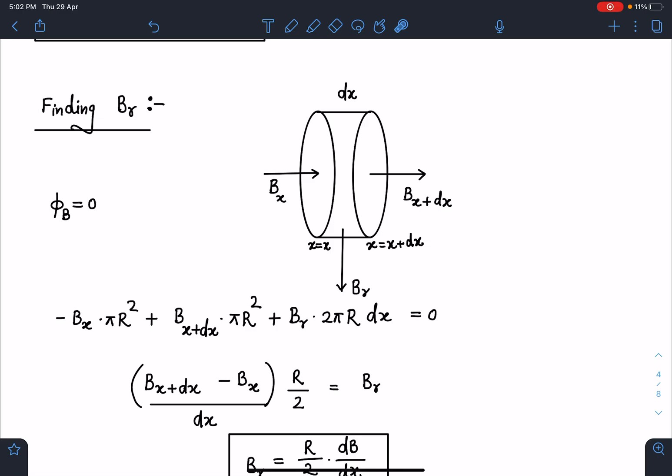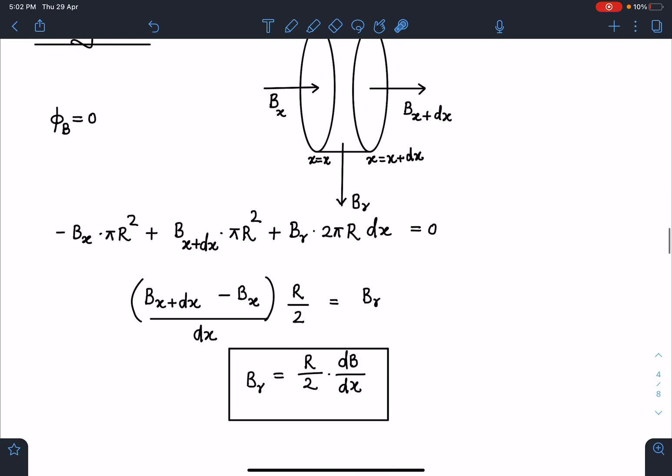So here we are going to get flux which is entering here, and total flux has to be zero through closed surface. This is the Gauss law for magnetism. So -Bₓπr² + Bₓ₊dₓπr² + Bᵣ·2πr·dr, that is the flux through the curved surface, and this sum should be zero. When we simplify this, we are going to get B at x plus dx minus B of x times r/2 by dx equals Bᵣ. So simply I can write this Bᵣ is nothing but r/2 dB/dx.